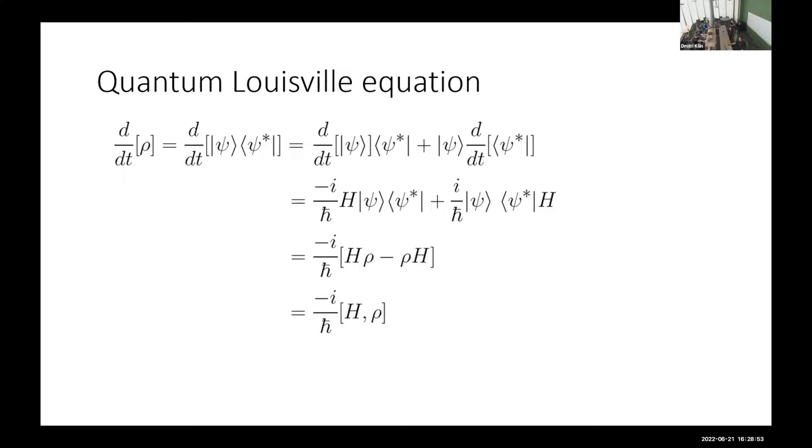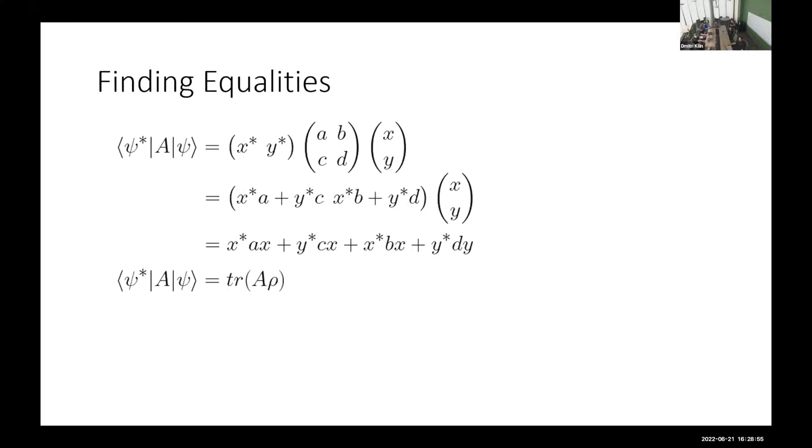And then just trying to find some connections between these, between different things, we're able to see that what we originally started off with is actually the trace, I don't have the trace part written out, but the trace of our A matrix times density with our density. And then the trace, if you don't know, it's just taking the sum of the diagonal elements of the matrix.